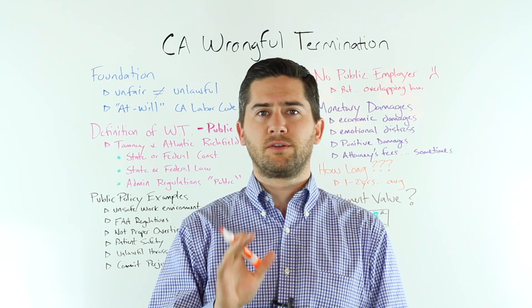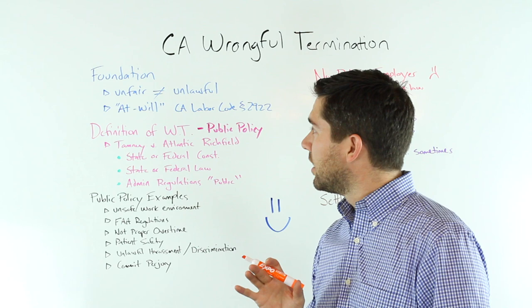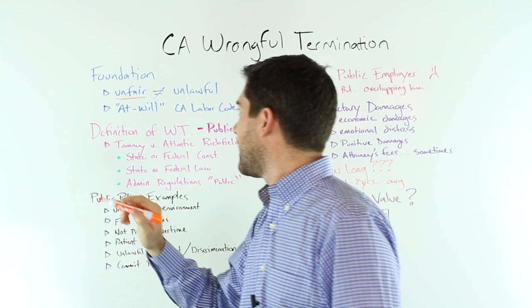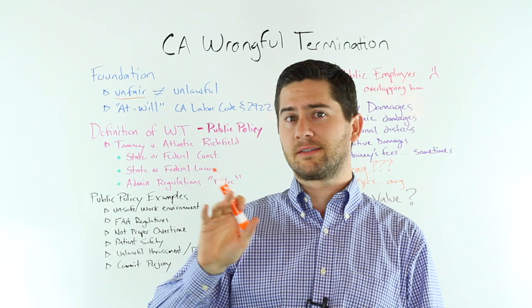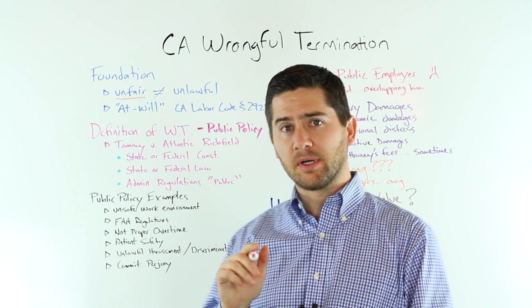To understand wrongful termination law, you first must understand two very simple principles. First of all, there's a significant difference between terminations that are unfair and terminations that are unlawful. Just because you were fired for something that somebody else wasn't fired for doesn't mean that the law was broken. Secondly, you must understand the at-will doctrine. California Labor Code Section 2922 details the at-will doctrine.